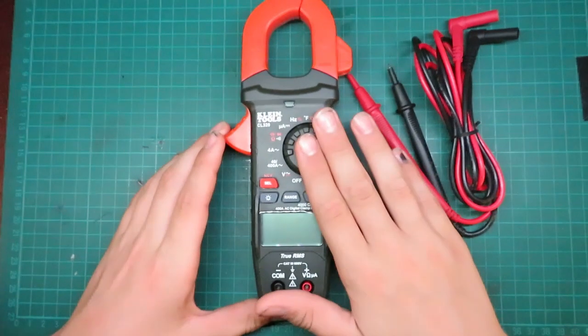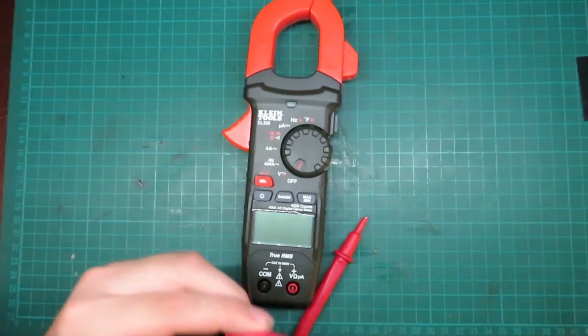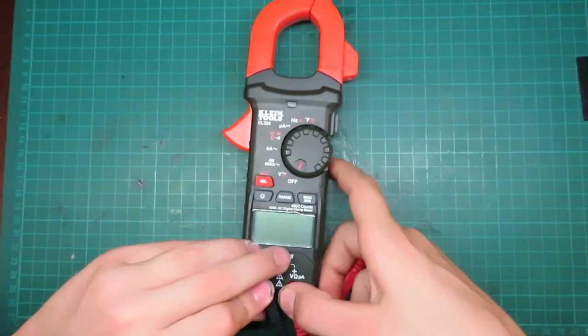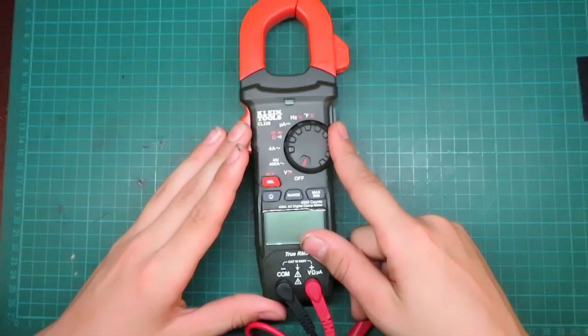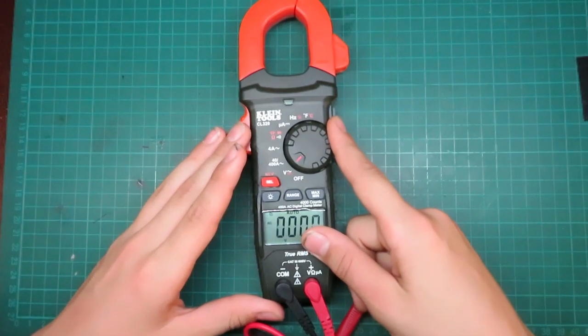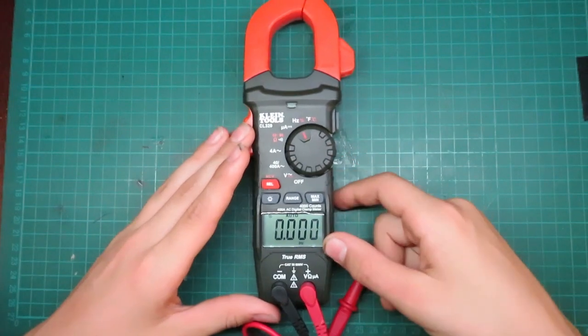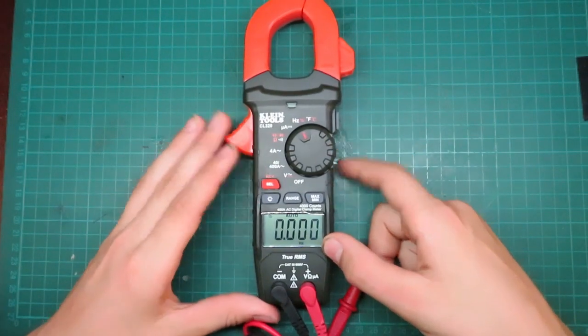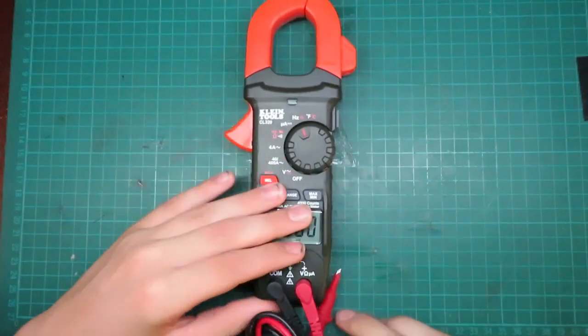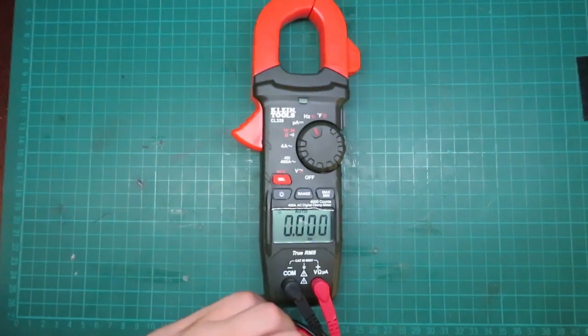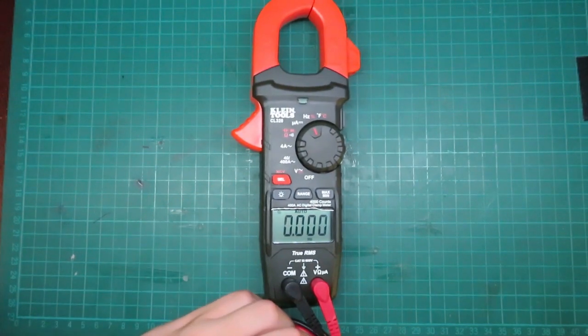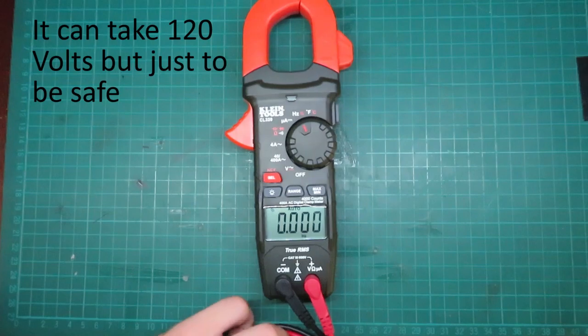Alright, with my clamp-on multimeter here, this will also work for measuring frequency. So what we'll do is we'll turn this on, and we'll go over here to hertz. There we go, on hertz. All right, so now what we'll do is we'll plug this into my auto transformer, just so that we don't fry this at full 120 volts.